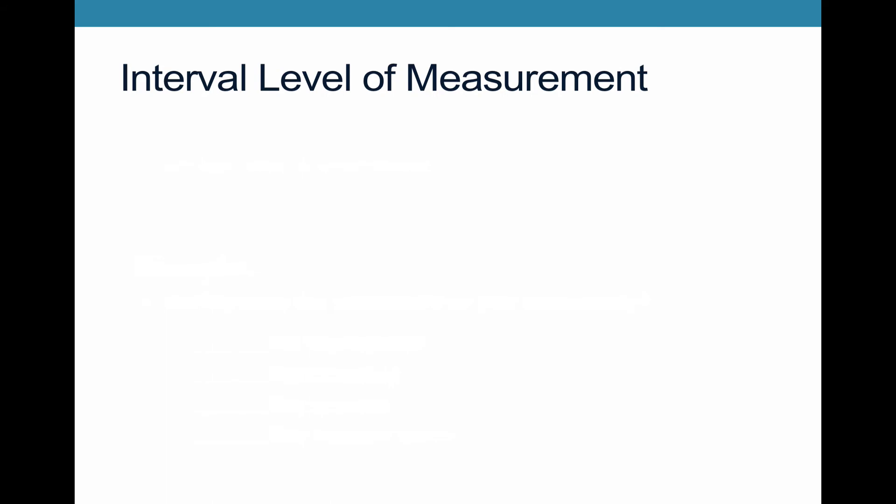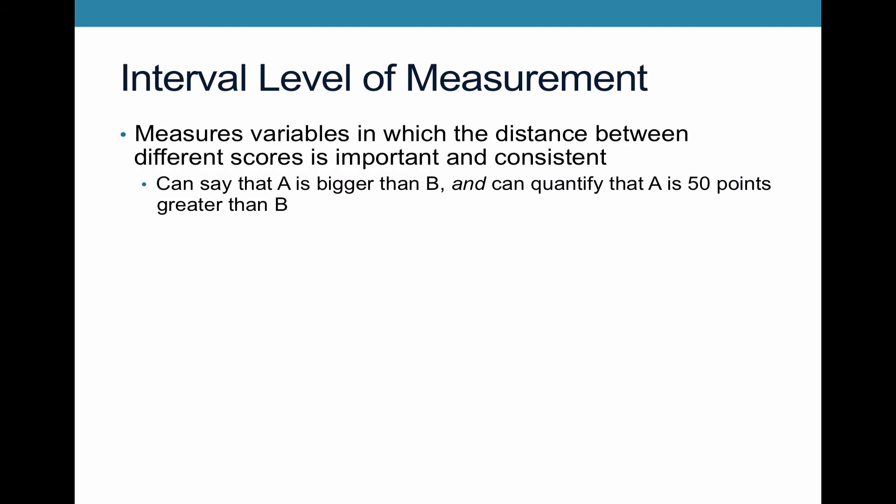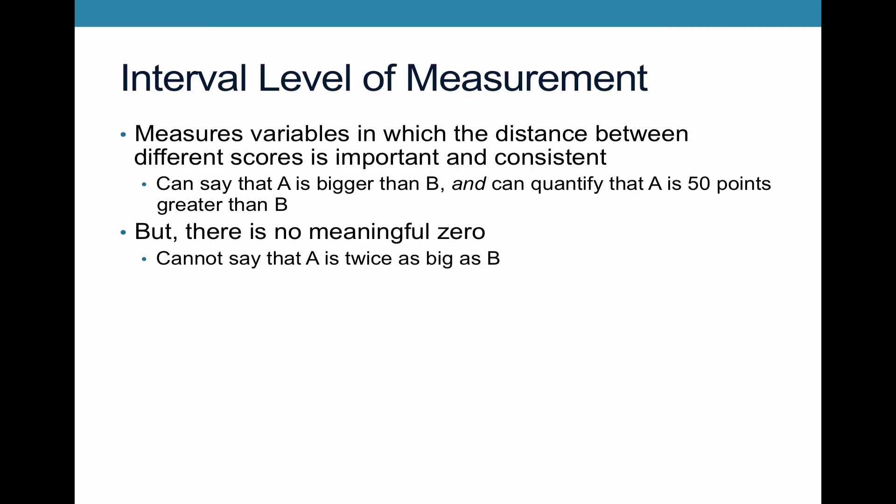Interval levels of measurement are a little bit tricky. An interval level of measurement is one where the distance between different scores is important, significant, and consistent — unlike an ordinal level of measurement. So you can say that A is bigger than B and you can say how much bigger, that A is 50 points greater than B, but there's not a meaningful zero point, and that means you can't say A is twice as big as B.